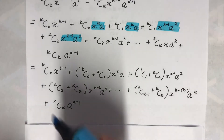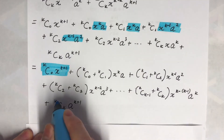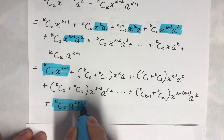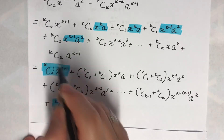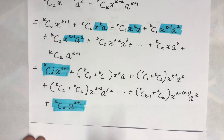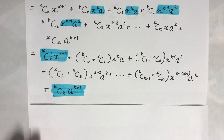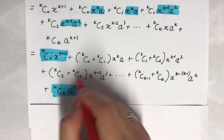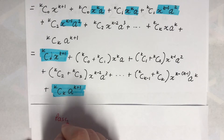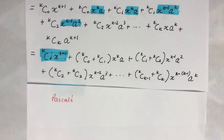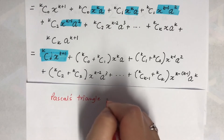So we have the first term here and the last one. You know those will both be one. Now before I go further, I need to show you something we're going to use, called Pascal's Triangle Identity.